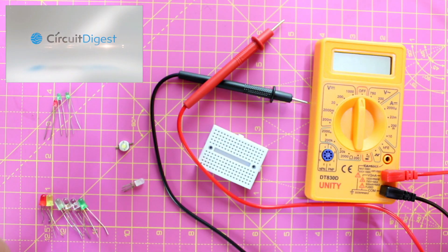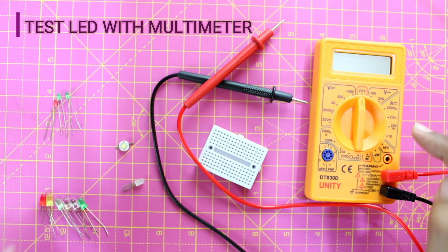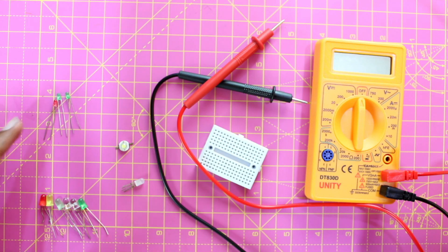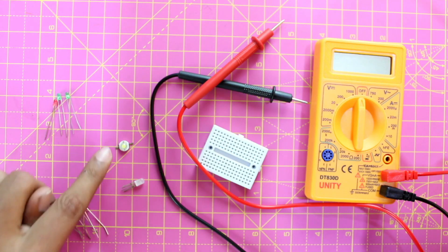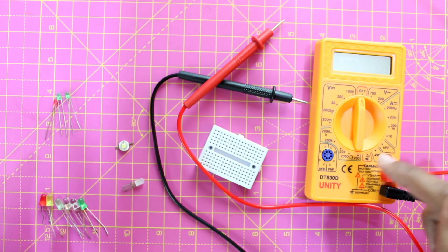Hi, this is Ashmanth from Circuit Digest, and in this video I'll show you how to test your LEDs using a multimeter like this one. I have a wide variety of LEDs here, starting from 3mm LED, 5mm LED, a 1-watt LED, and an RGB LED. I'll show you how to test all these with the multimeter.